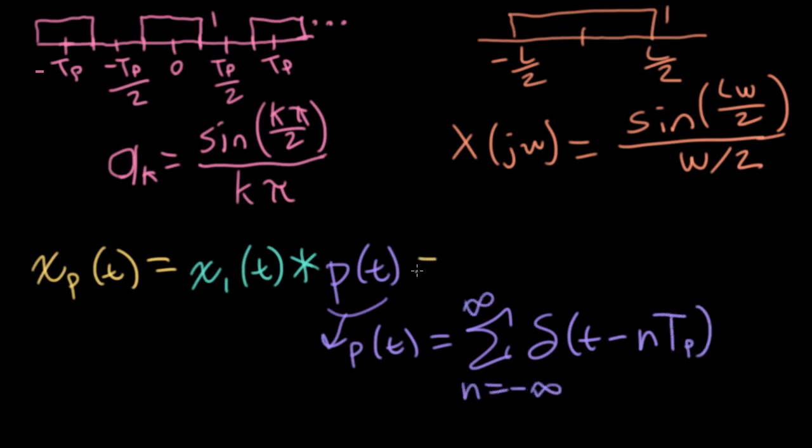So when we look at what this function actually looks like, convolution is a linear time invariant operation. So I can pull that convolution of the x1 of t through the summation. And what happens when I convolve something with a delta function? Well, it gives me a shift. So what I wind up with is a sum of a bunch of these core functions that are placed t sub p apart.